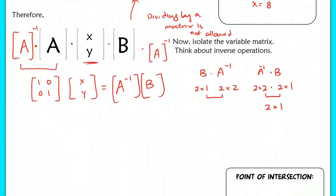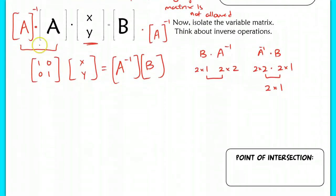So, after I get a inverse out of there, since I'm multiplying the identity by x, y, I end up with x over y, or x, y, I'm sorry, is equal to a inverse times b. So let's plug that into our calculator and see what we get.